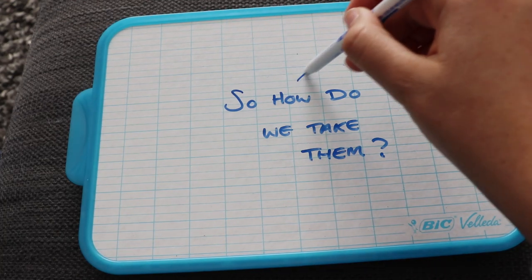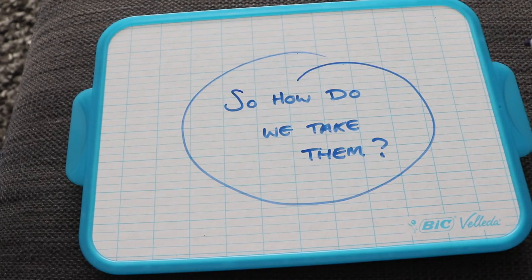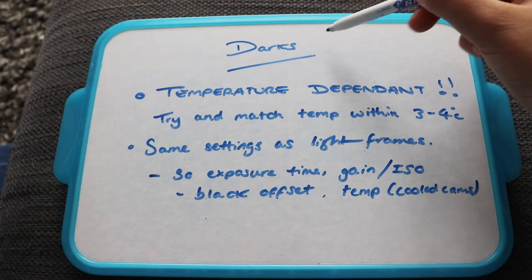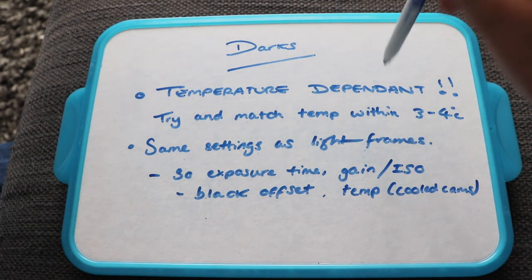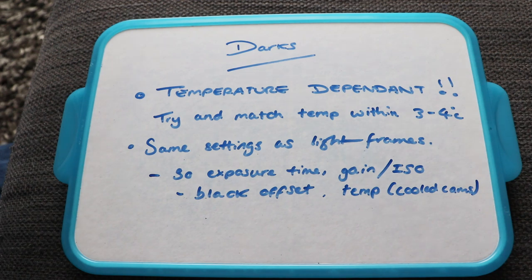So how do we take them? So the first one is darks. And these are really important to get right. They are temperature dependent. So if you're using a DSLR or a fan cooled astronomy camera, it's best to take your darks after your light frames so they are the closest temperature as possible.